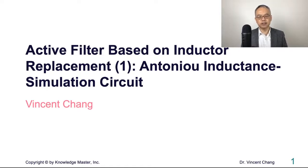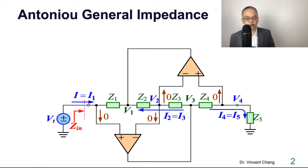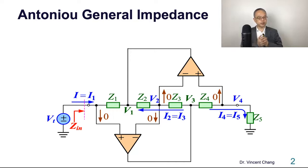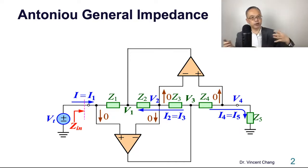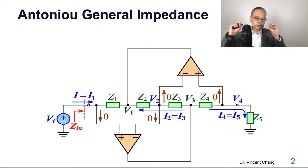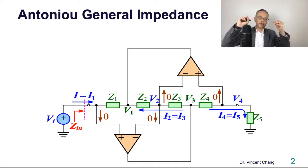Antonio inductance simulation circuit. Antonio general impedance converter. This circuit is the general impedance converter invented by Antonio. It is composed of two operational amplifiers and five general impedances. Each impedance could be a resistor, a capacitor, or an inductor. We'll find out it serves as a two-terminal device between the input terminal and the ground.